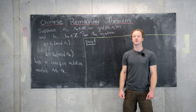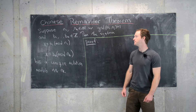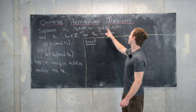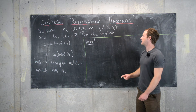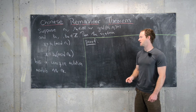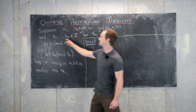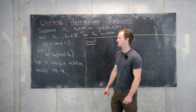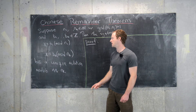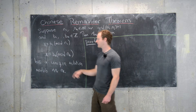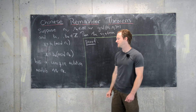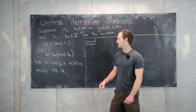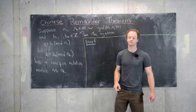In this video we're going to look at the following result from number theory known as the Chinese Remainder Theorem. We start off with k natural numbers that are pairwise relatively prime, so the GCD of n_i and n_j is 1 whenever i is not equal to j. We also have k integers, and given that setup we have a system of linear congruences: x ≡ b_1 mod n_1, up to x ≡ b_k mod n_k. This system of linear congruences has a unique solution, and that uniqueness is modulo the product n_1 through n_k.